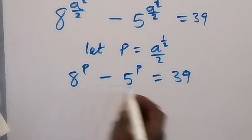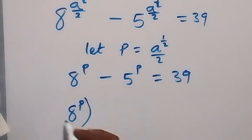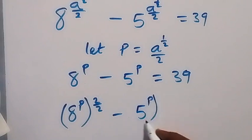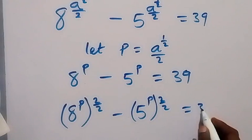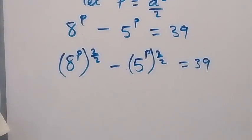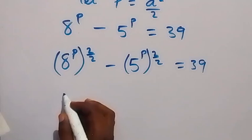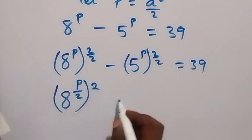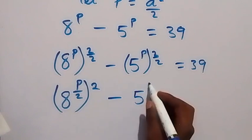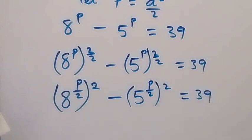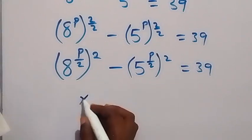We can rewrite this as 8 raised to power p, then raised to power 2 over 2, minus 5 raised to power p, raised to power 2 over 2, which equals 39. Since 2 over 2 equals 1, this is the same as before. By the law of indices, multiplying powers gives us 8 raised to power p over 2, raised to power 2, minus 5 raised to power p over 2, raised to power 2, equals 39. This follows the difference of two squares pattern: x squared minus y squared.